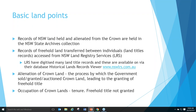The alienation of Crown land is the process by which the government sold, granted, or auctioned Crown land, leading to the granting of freehold title. The other concept is the occupation of Crown land — that's tenure — where we're talking about leasing, squatting, or some other sort of licensed occupation, and freehold title is not granted. The land is still owned by the government. So: land in private hands versus land in government hands.